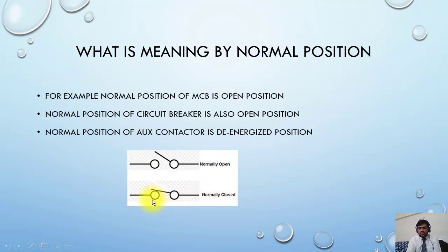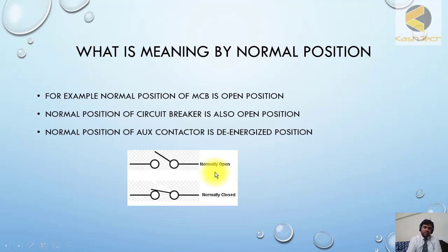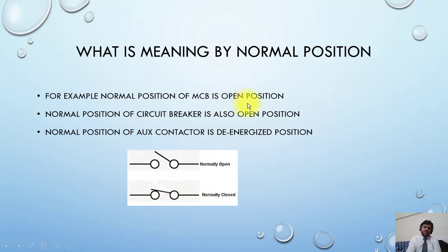As per drawing philosophy, if the MCB is at normal position, this contact will be open. If the MCB is at closed position, this will be closed. If I make the MCB open and check continuity, I will find this contact open. And at closed position, I will find continuity.